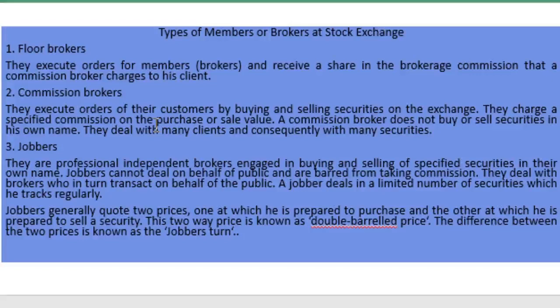The second type is commission brokers. They execute the orders of their customers by buying and selling securities on the exchange and charge a specified commission on the purchase or sales value. Commission brokers do not buy or sell securities in their own name; they deal with many clients and consequently with many securities on behalf of investors.